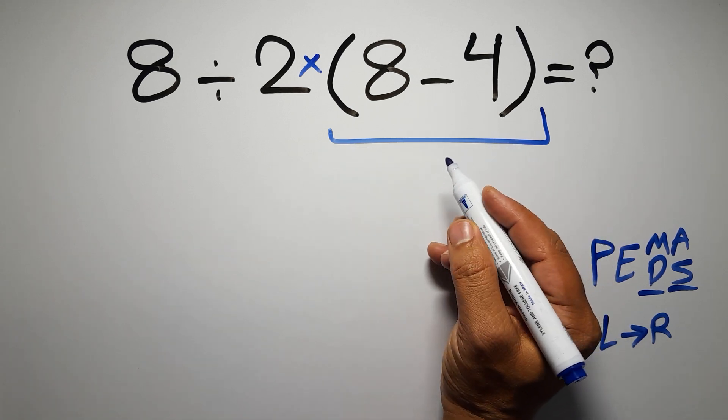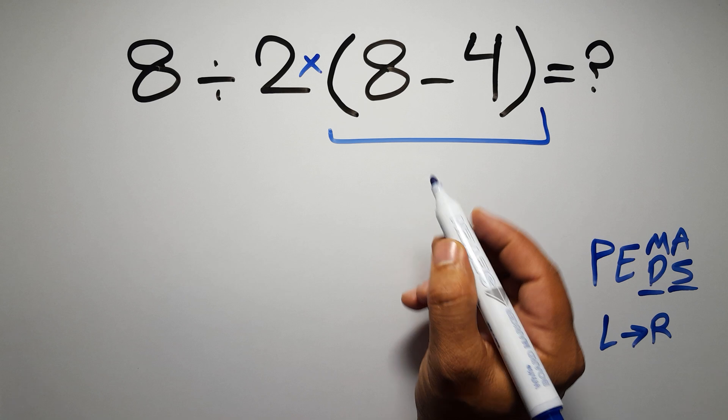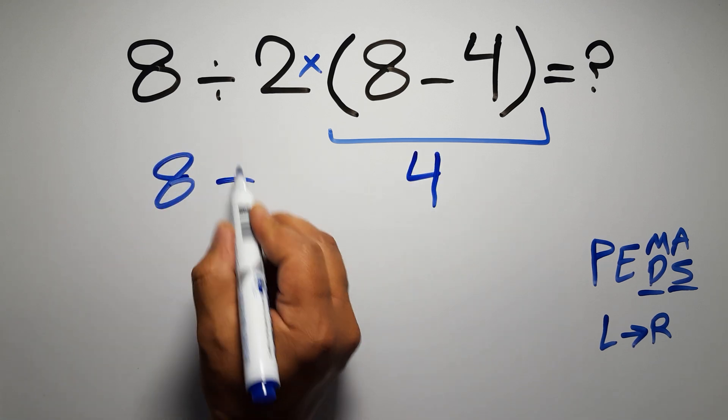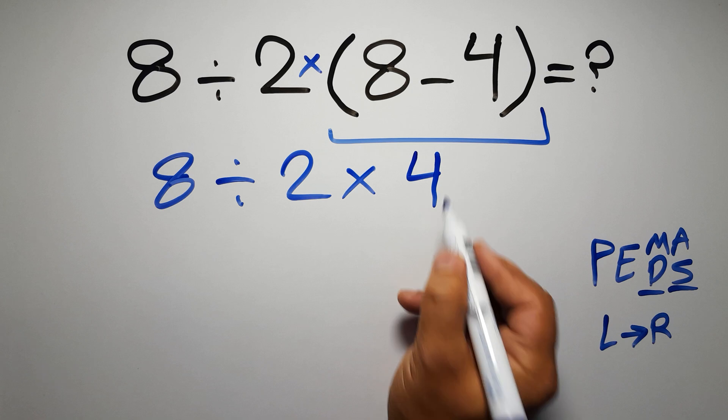First these parentheses. Inside these parentheses, we have 8 minus 4, which equals 4. So 8 divided by 2, then times 4.